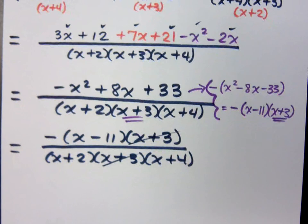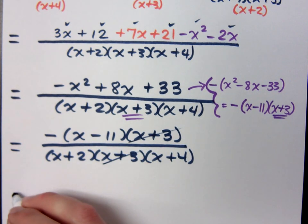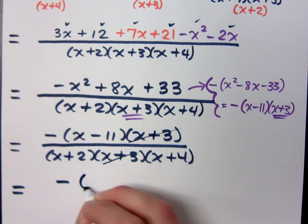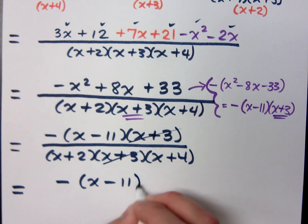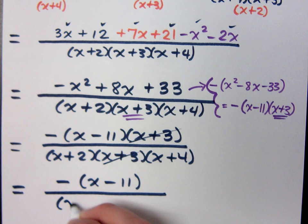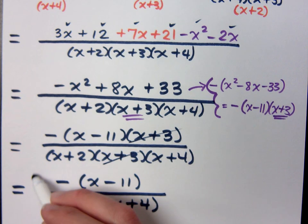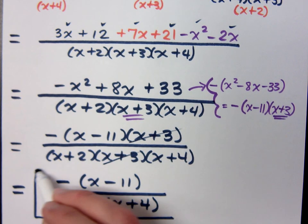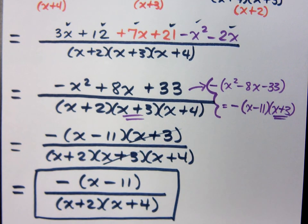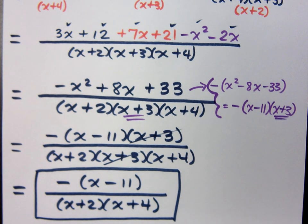So when it's all said and done, my final answer is negative times the factor x minus 11 over the remaining factors in the denominator, x plus 2 and x plus 4. Is this factor of negative important to have then? Yes. If you don't have it, you're wrong. Now here's something that you may see if you come across this problem, say, in my math lab or in the textbook.